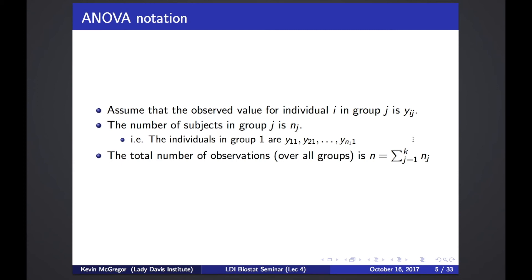A little bit of notation: we use two subscripts now. The first subscript i tells you which individual you're talking about, and the second subscript tells you which group you're in. So y_ij means individual i in group j. We have n_j subjects in group j, so we can have different numbers of subjects in different groups. If we sum up all the n_j's, we get n — our total sample size over all groups.